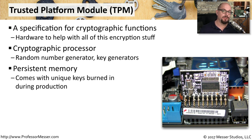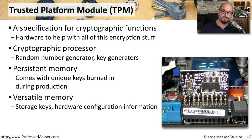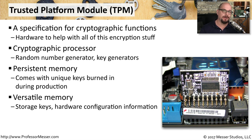The TPM also includes persistent memory, and inside that memory are some hard-coded keys that are unique to the individual TPM. There's also versatile memory inside of the TPM that's used to store other types of data. For example, you can store encryption keys in this versatile memory, or you can store configurations of the current hardware so that later that configuration can be compared to what's currently running. This is a way that administrators can use to determine if any of the hardware of a system may have changed over time.